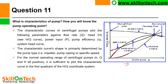So let us know where the operating point of the pump is. You can see in this picture: this is the HQ curve going like this, and this is the system head curve. Where these two curves intersect — that point is called the operating point of the pump.